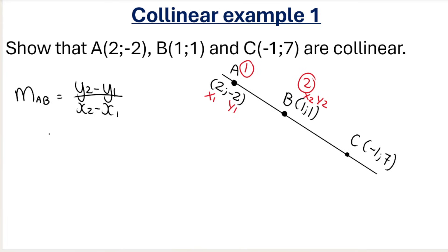If I substitute in carefully: Y2 would be 1 minus Y1, which would be -2. Remember your brackets. Over X2, which would be 1, minus X1, which would be 2. So I get 1 minus -2—basically 1 plus 2—which is 3 at the top, and 1 minus 2 is -1 at the bottom, which gets me -3.